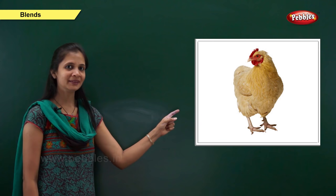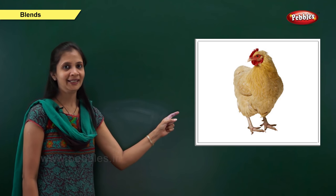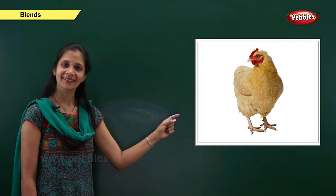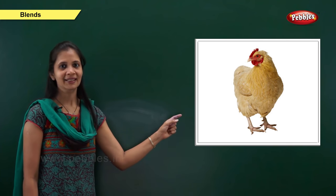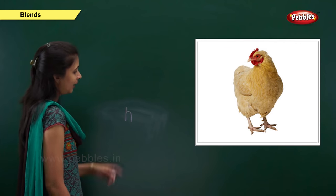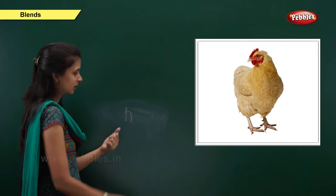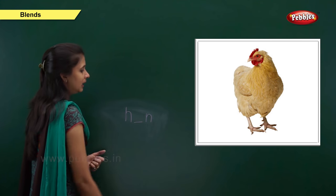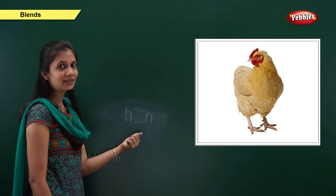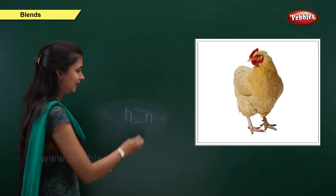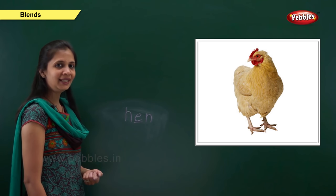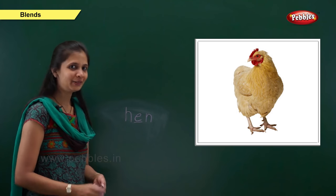Next one. Which picture is this? Yes, it is a picture of hen. What is the sound of it? It is ha, a, na — hen. When the sound is 'ha', the letter is h. When the sound is 'n', the letter is n. When the sound is 'a', the letter is e. The vowel e. So: h, e, n — hen.